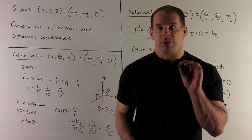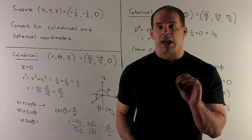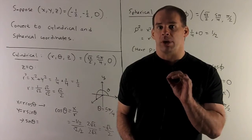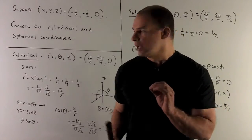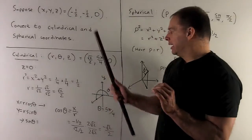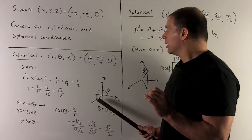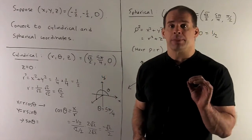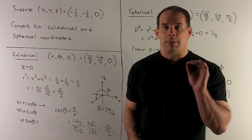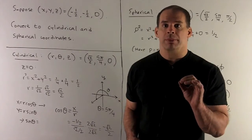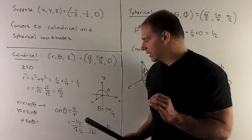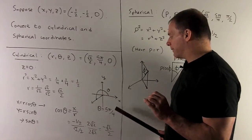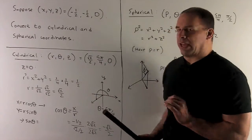Now I'm looking for theta. I have two options. One, I can just plot our point in the xy plane — that's going to be down here. The x and y values are the same, so we're looking at a multiple of pi-fourths. The multiple of pi-fourths in this quadrant is going to be five pi-fourths. So that's our theta.